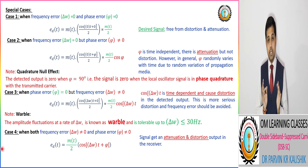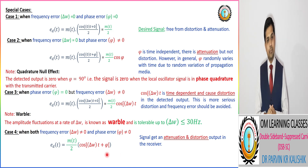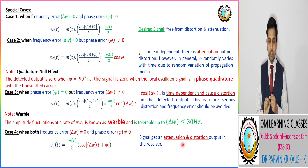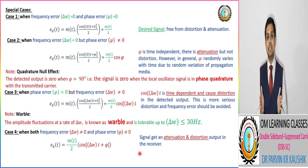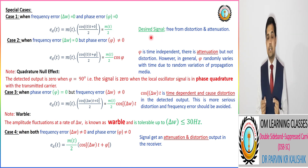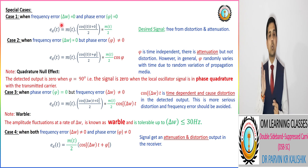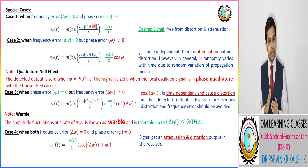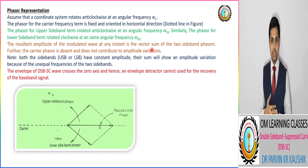In the last case, both frequency error and phase error are present. The output has both attenuation and distortion, and the resultant signal is not the desired message signal. It is therefore necessary that the local oscillator signal must be synchronized with the transmitted carrier signal in terms of both frequency and phase.